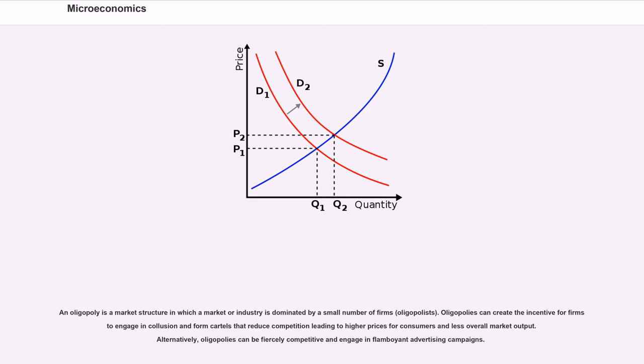An oligopoly is a market structure in which a market or industry is dominated by a small number of firms, oligopolists. Oligopolies can create the incentive for firms to engage in collusion and form cartels that reduce competition leading to higher prices for consumers and less overall market output. Alternatively, oligopolies can be fiercely competitive and engage in flamboyant advertising campaigns.